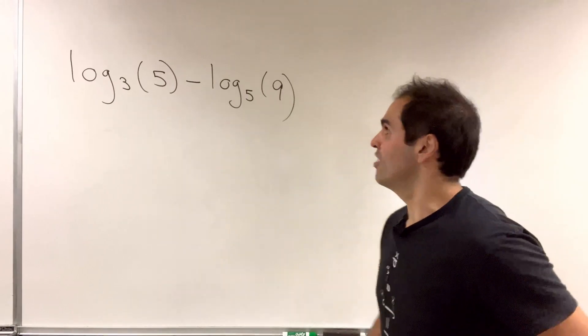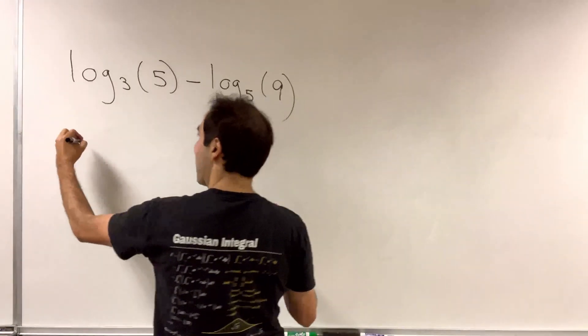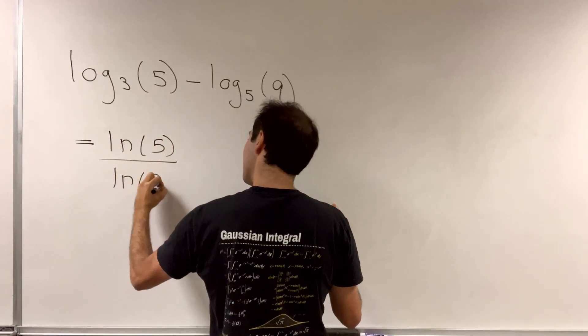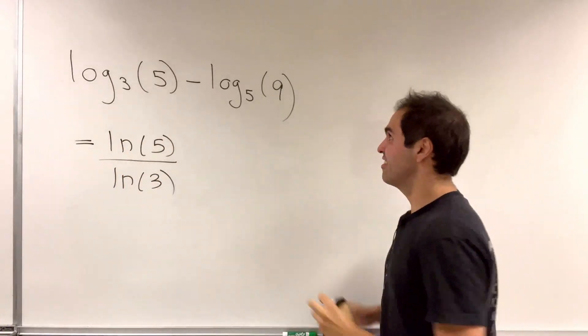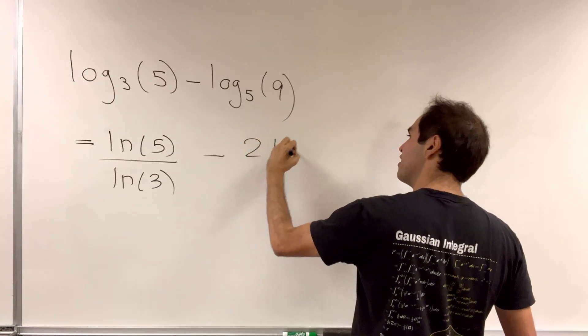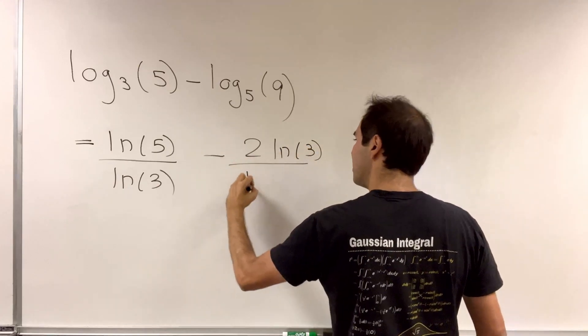So consider here the difference, which you can write as ln of 5 over ln of 3, our good friend ln the generous, minus ln of 9, which is 2 ln of 3, over ln of 5.